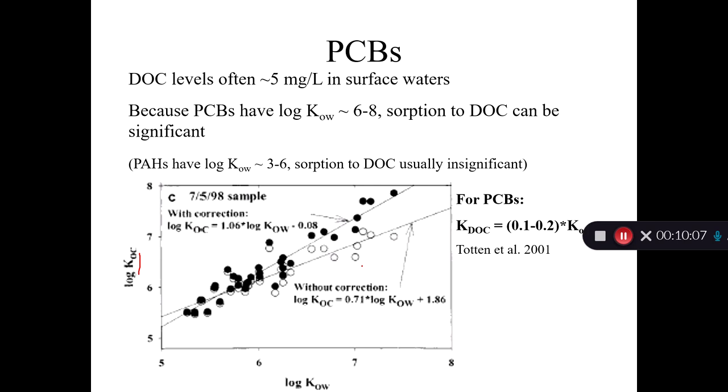And that's the open circles here. So the open circles are the KOC value calculated with no correction at all. And when you do that, you get a slope for the log KOC versus log KOW of about 0.7. We know from our previous lecture on sorption that Karickhoff had predicted that the slope ought to be one. And Maynard and Pankow and lots of other people have predicted that the slope ought to be one.